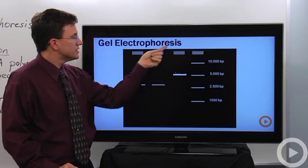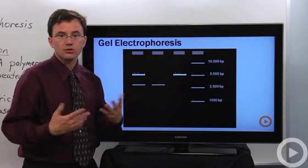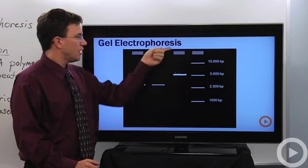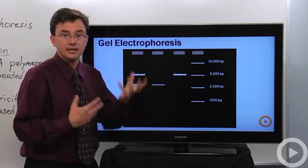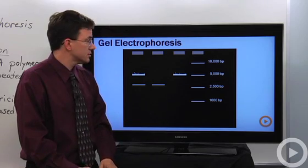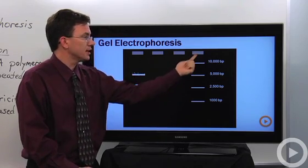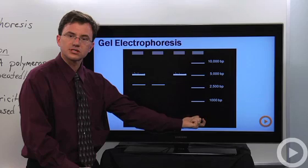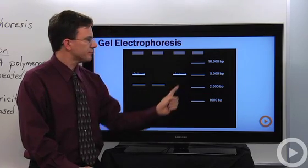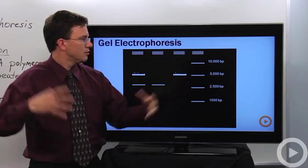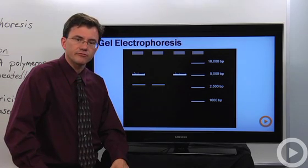And what we do is we loaded our DNA samples into these holes here called wells. We turn on the current. This end is negatively charged. This end is positively charged. DNA has a negative charge, so it is repelled by the negative side and goes zoom towards the positive end. And little guys, 1,000 base pairs long, move a lot faster than the big 10,000 base pair long pieces of DNA.